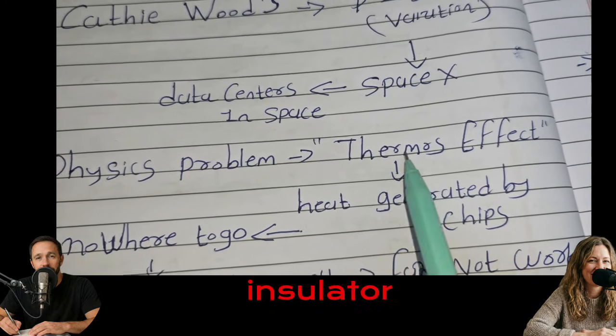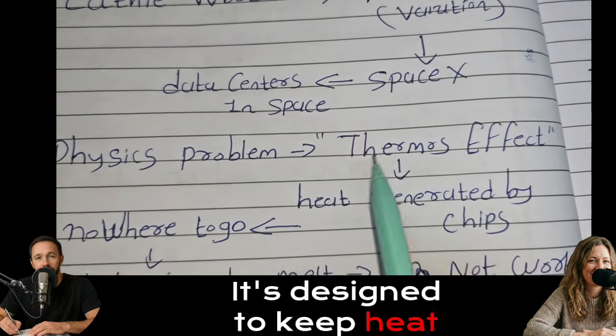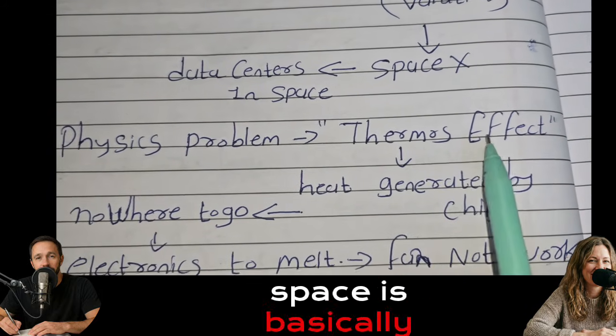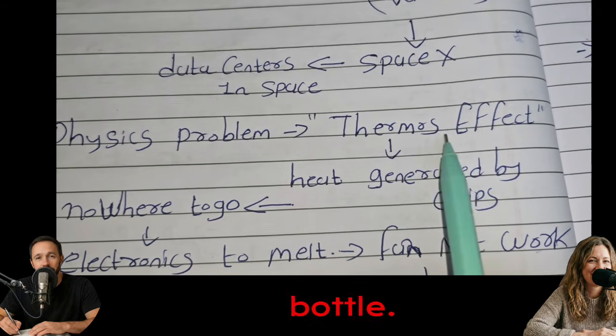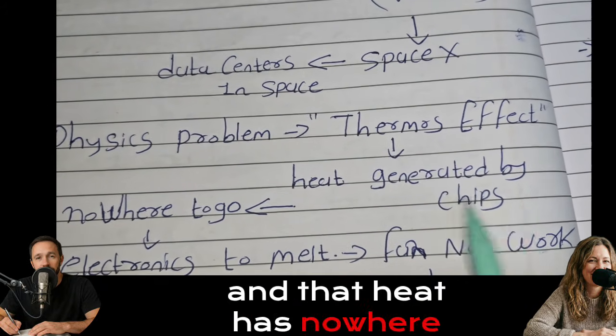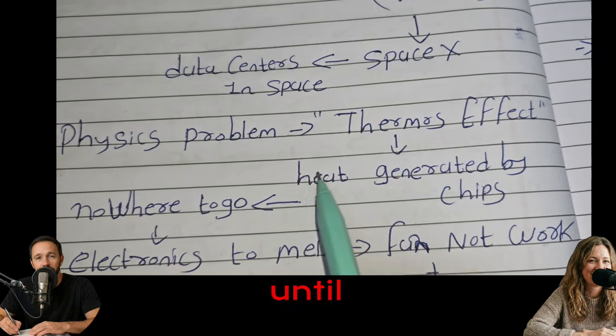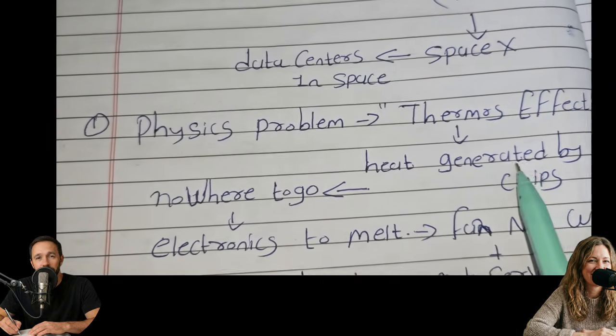A vacuum is the best insulator in the universe. It's designed to keep heat in. So a computer in space is basically trapped inside a perfect thermos bottle. The chip generates heat and that heat has nowhere to go. It just builds up and up until the silicon melts. So it just cooks itself. That's problem one.